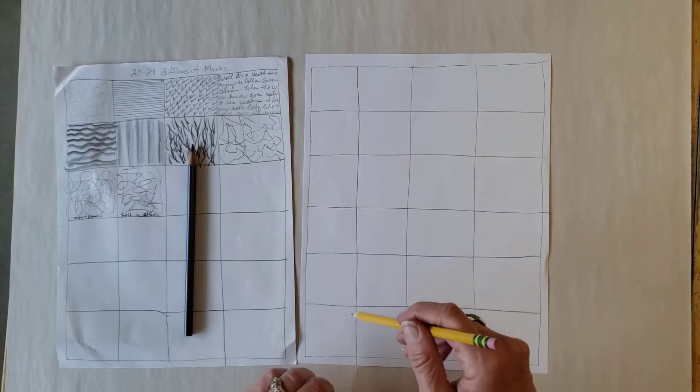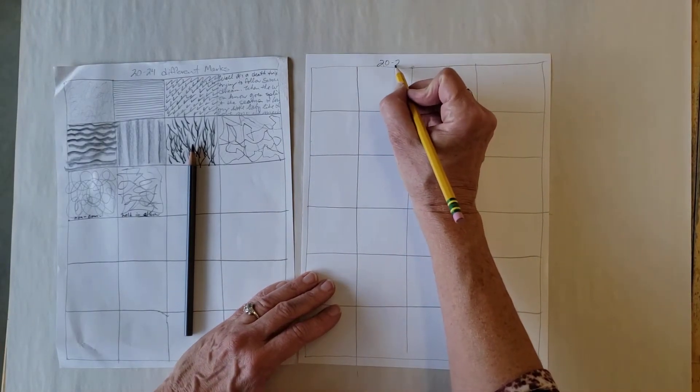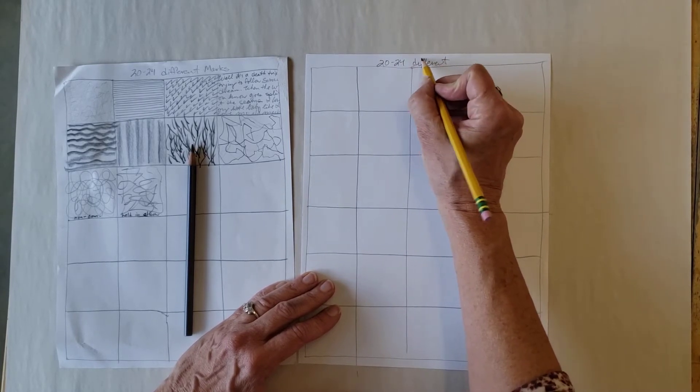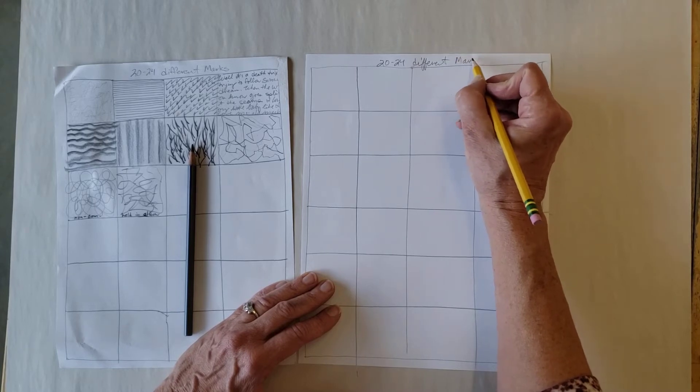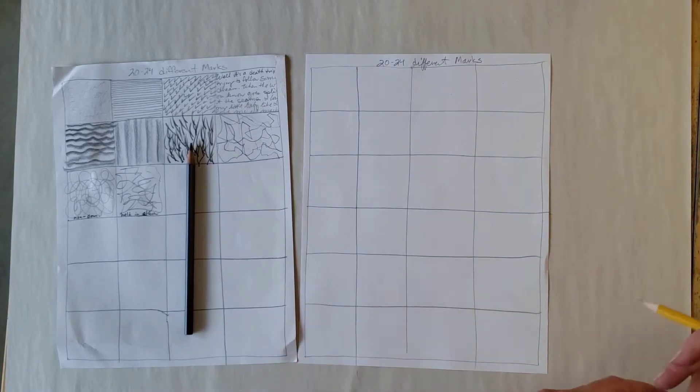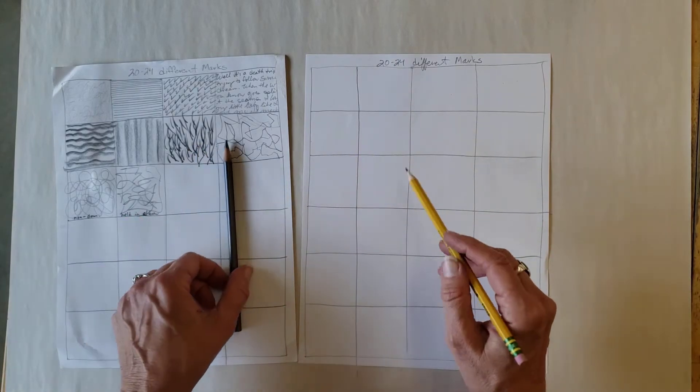I got 24 squares in all at the top, 22 to 24 different marks. I actually think you can get to 24 but you have to at least get to 20. This is about being creative and playful and thinking of what you can do.